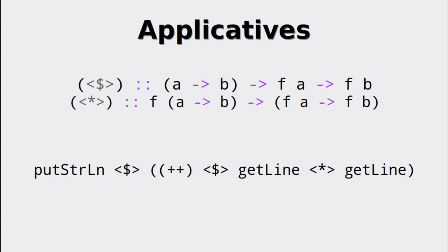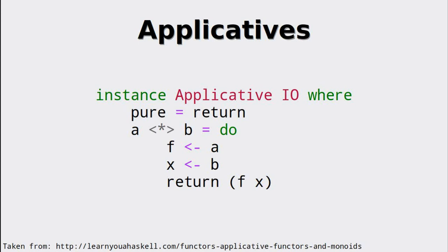So why does that work? The operator for applicatives is equivalent to this do notation snippet, but that combined with pure is enough to allow chaining of functions in the functorial context. Thus, applicatives are our entry ticket for input-output, and indeed they are one way of achieving input-output operations without monads.